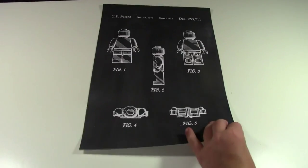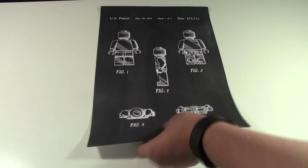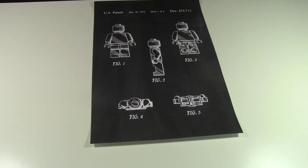There is nothing on the back of each patent. It is just plain white paper. But of course, on the front is this chalkboard paper which is really cool because it looks like these were drawn on the chalkboard.